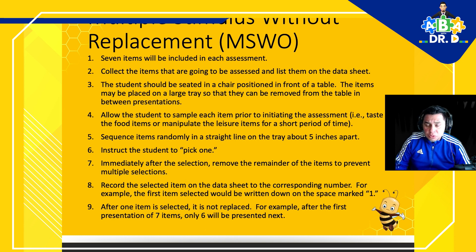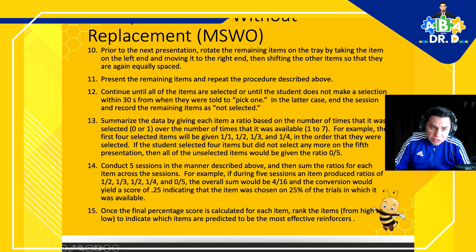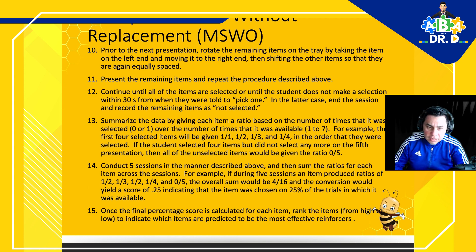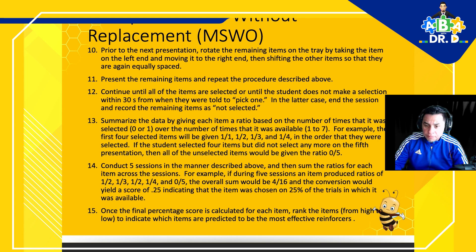As soon as the individual picks an item, you're not replacing it — you keep the items that have not been picked yet, essentially tracking the order in which they're selected. Prior to the next presentation, rotate the remaining items on the tray by taking the item on the left side and moving it to the right side, then shifting the other items so they are equally spaced out. Present the remaining items and repeat the procedure until all items are selected, or until the student does not make a selection within 30 seconds.